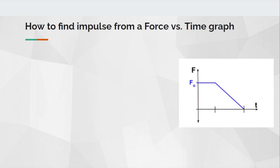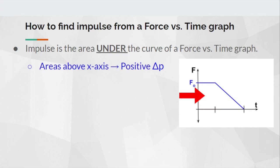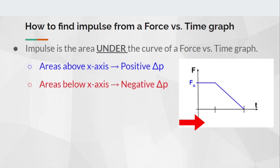How do we find impulse from a force versus time graph? Impulse is the area under the curve of a force versus time graph — from the curve down to the x-axis. You did something similar in the energy unit when figuring out work from a force versus displacement graph. Areas above the x-axis are going to be positive impulse, and the area below the x-axis is going to be negative impulse.